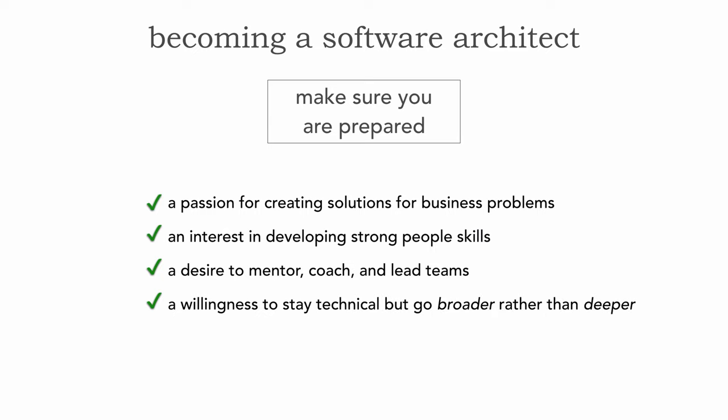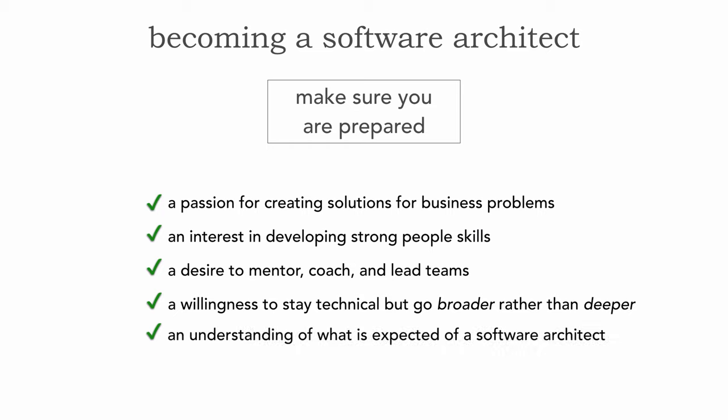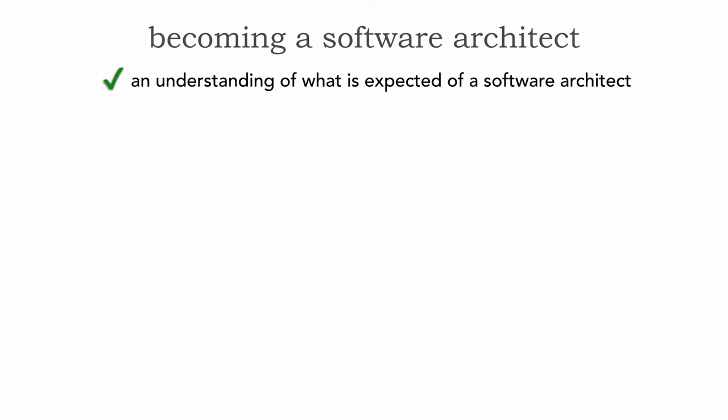It's also a willingness to stay technical. I think every architect should still be hands-on in coding, but it's the willingness to go broader in technology rather than deeper. An architect really focuses on technical breadth rather than technical depth, and that's a struggle point for many people wanting to become an architect. Finally, it's an understanding of what's expected as a software architect. An architect is expected to do eight core things, irrespective of the title or role in your particular company.